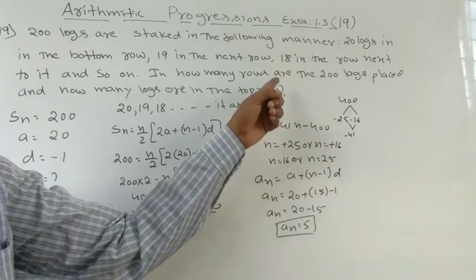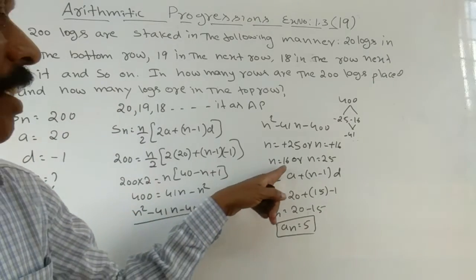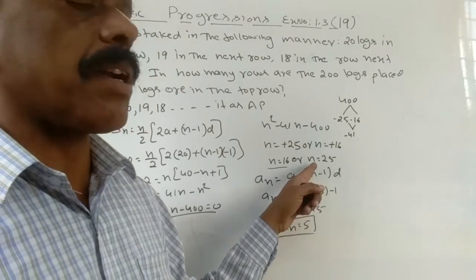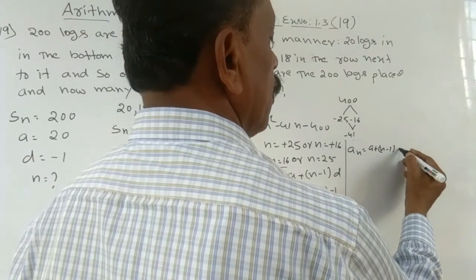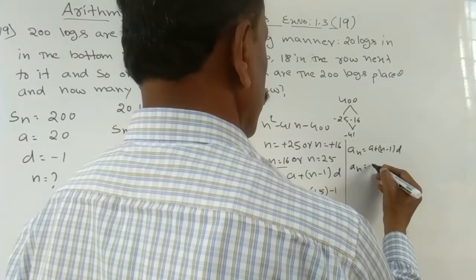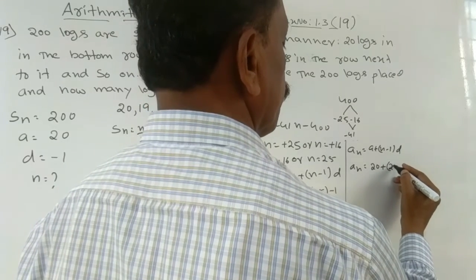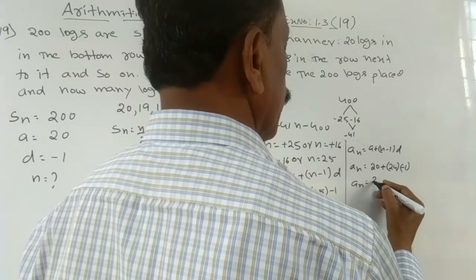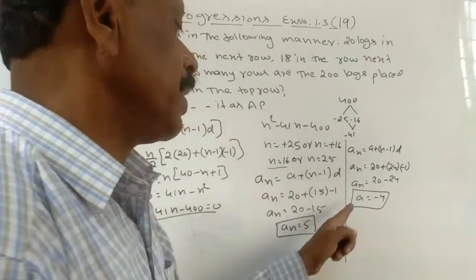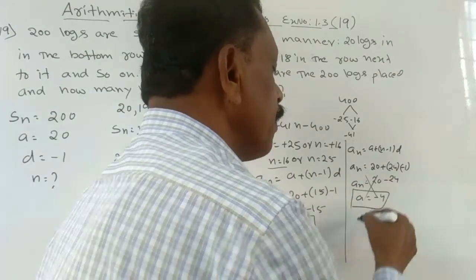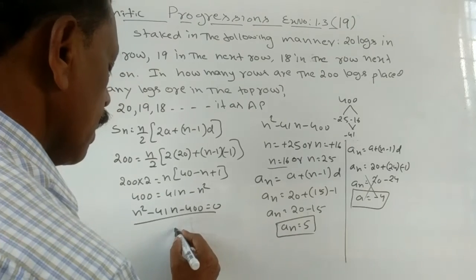Therefore, the top row has 5 logs and the number of rows is 16. We confirm by checking: n equal to 25 gives an equal to minus 4, which has no meaning, so we reject it. Therefore n is equal to 16 and the top row contains 5 logs.